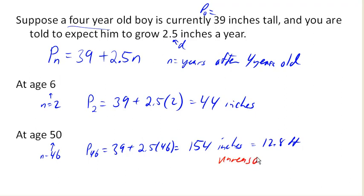And the reason that this is unreasonable isn't because our model was a bad model. It's just that our model is only valid for a certain amount of time. In this case, if we're talking about a child's growth, at some point a child stops growing.